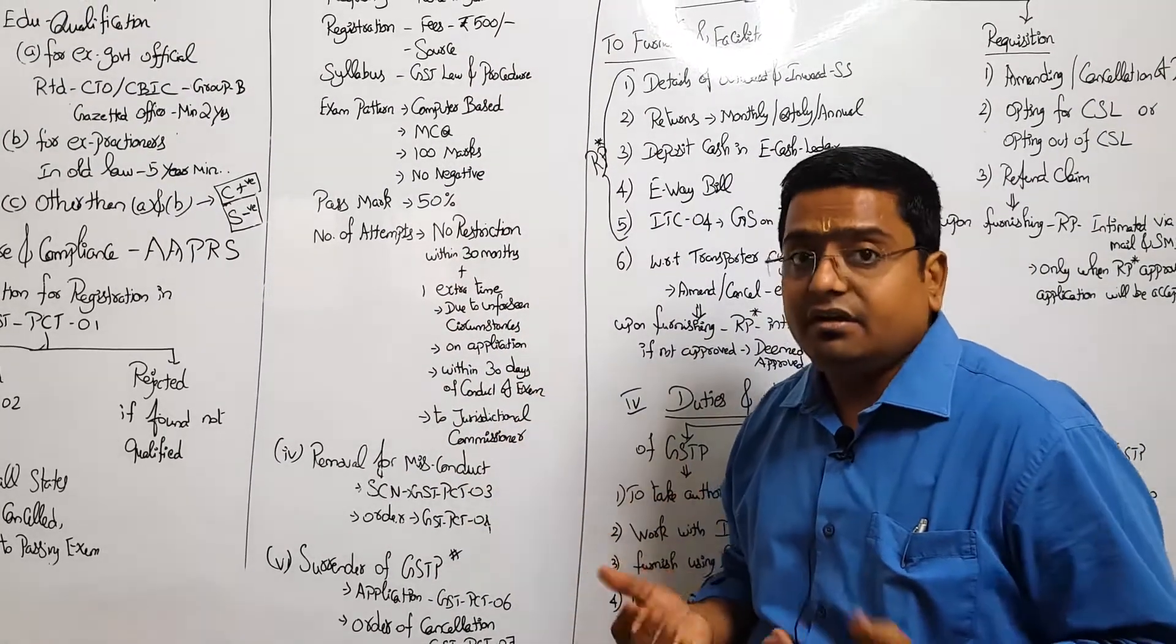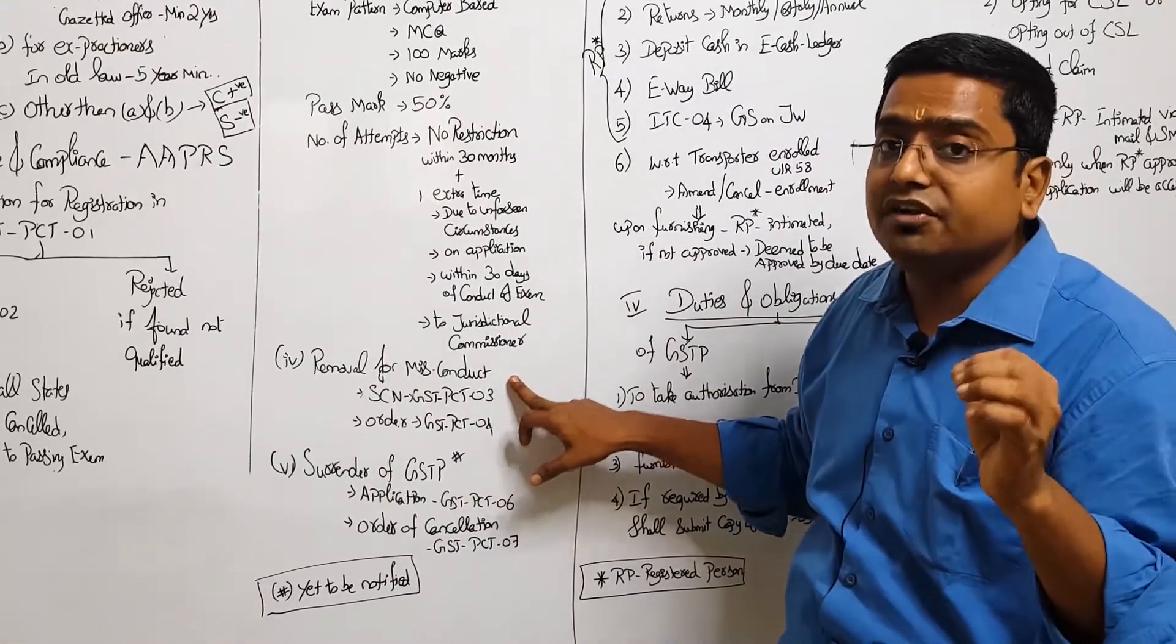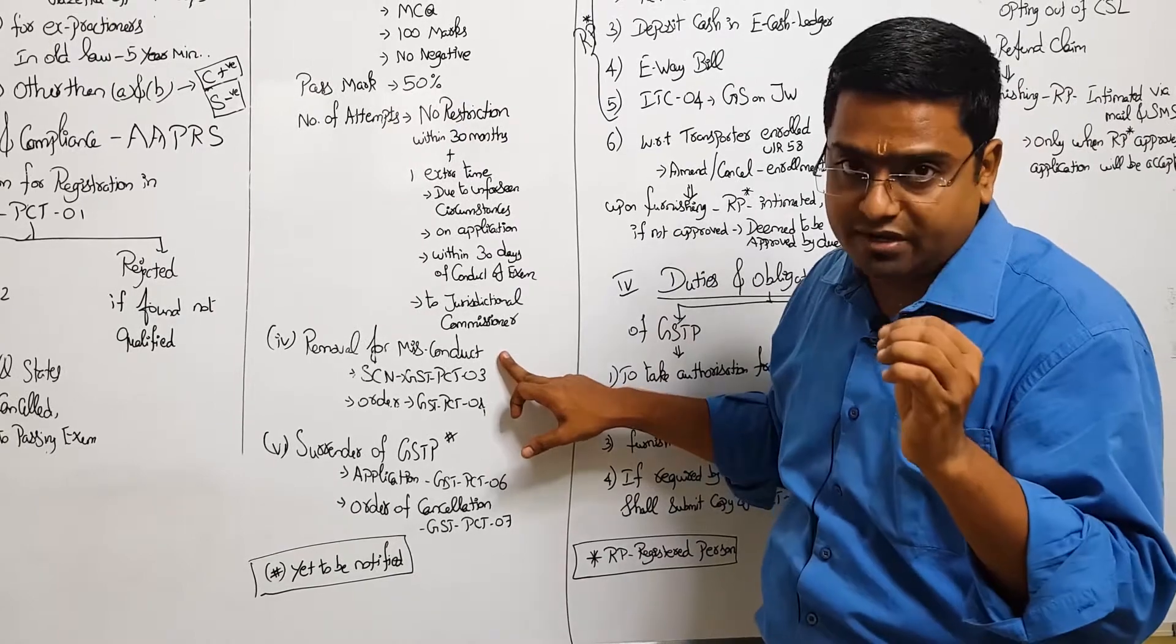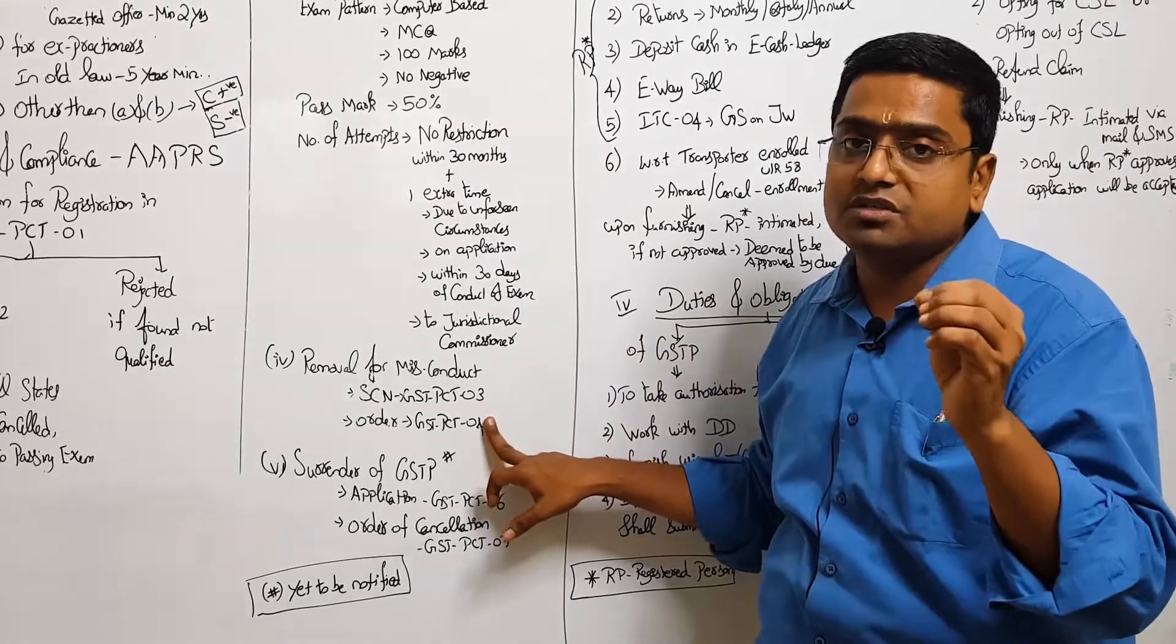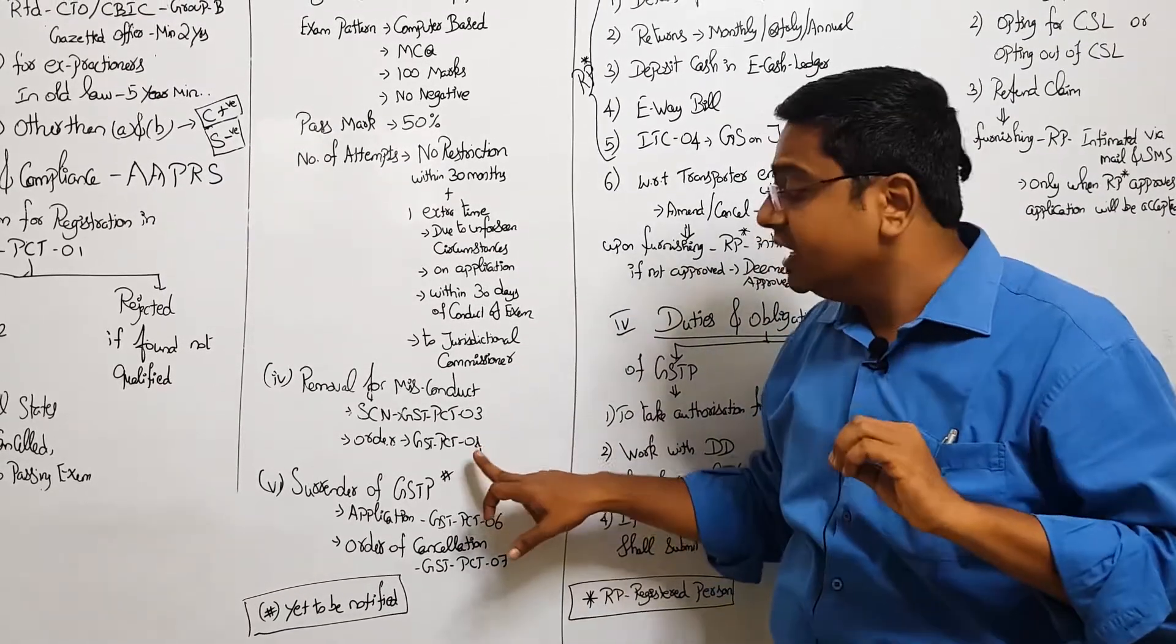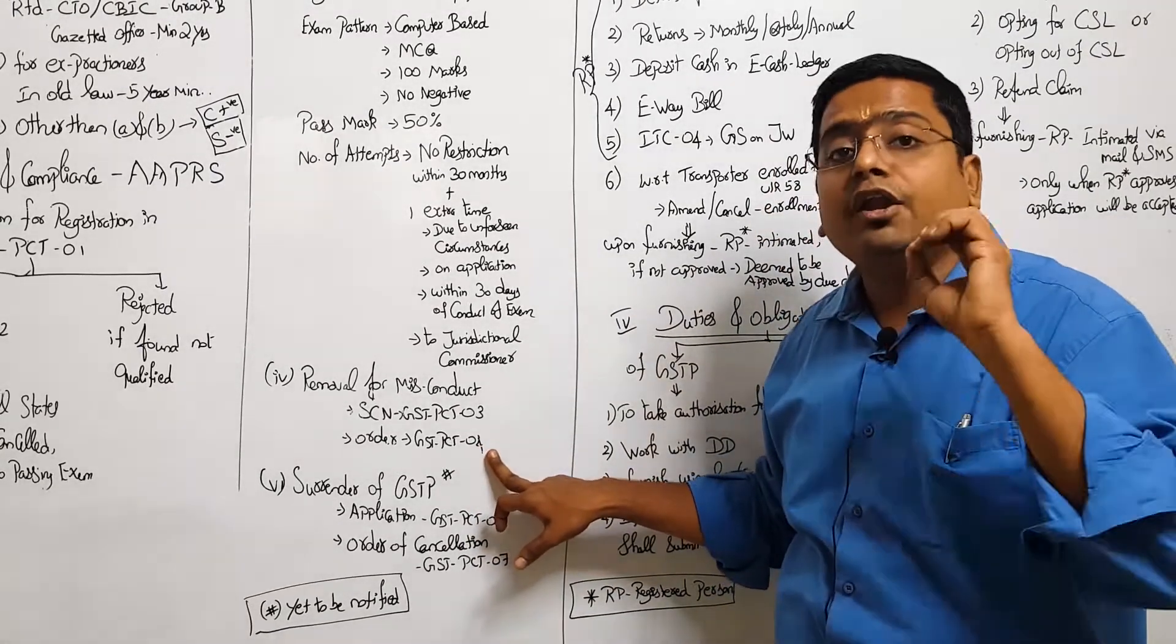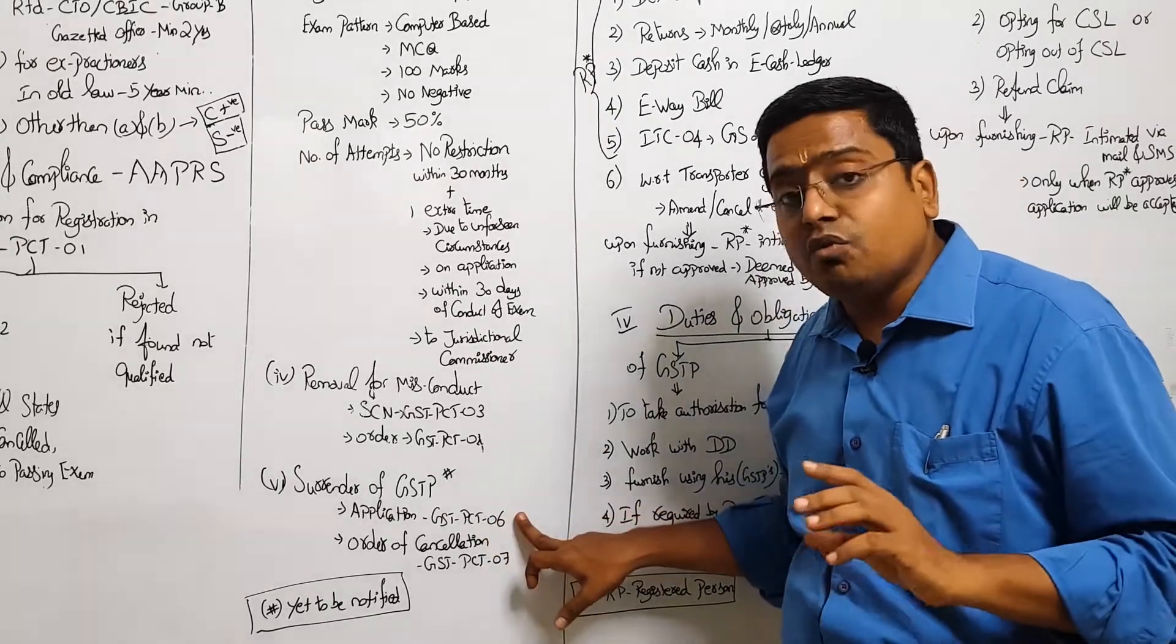And after doing this all, can he be removed or surrendered? Yes, he can be removed for doing any wrong or mischief activities, which is basically the grounds of misconduct. What is the procedure before removing? He will be given a showcase notice by the proper officer and will be asked to reply. After considering the reasons, an order of removal will be passed in PCT-04.